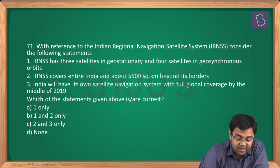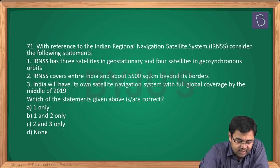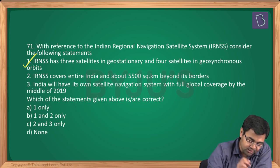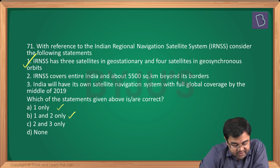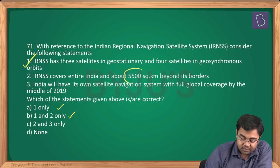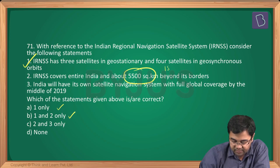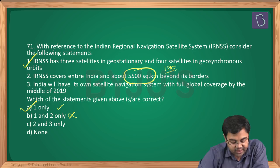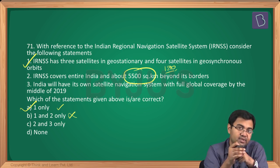Question number 71: with reference to IRNSS — Statement 1 says IRNSS has 3 satellites in geostationary and 4 in geosynchronous orbit — true. Statement 2 says IRNSS covers entire India and about 5500 square kilometers beyond its borders — wrong, it is approximately 1500 km. So statement 2 is eliminated. No need to read statement 3 as we already have the answer — statement 1 only.